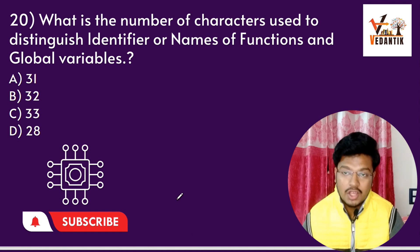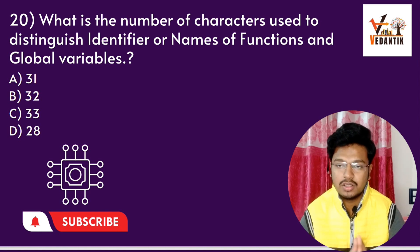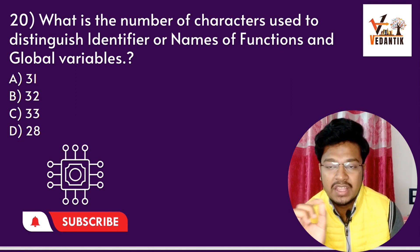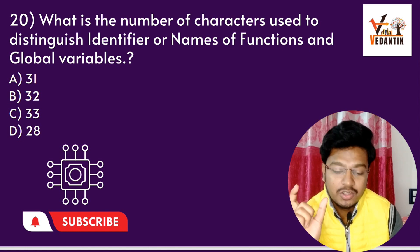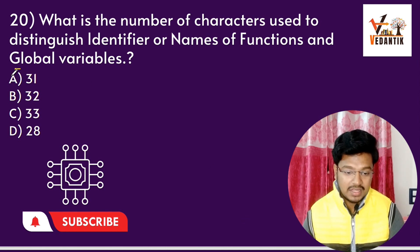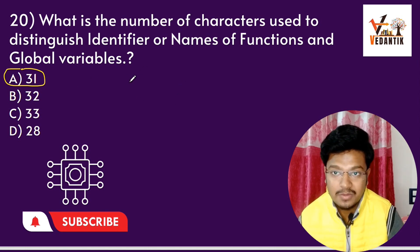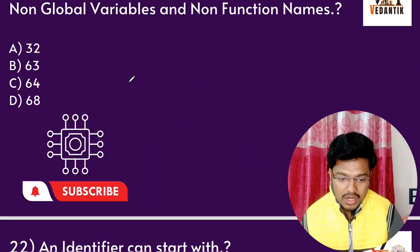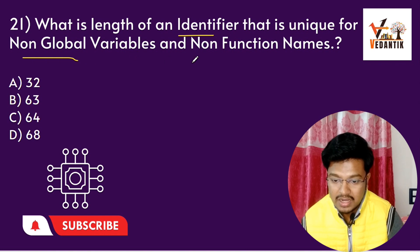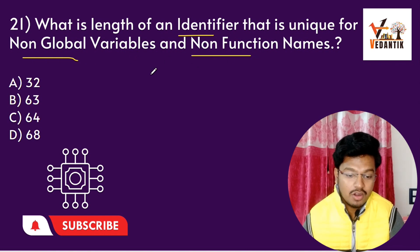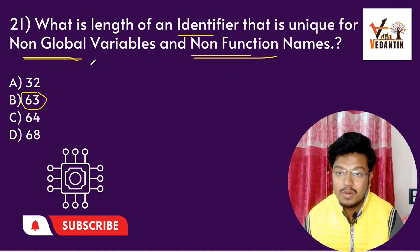Question 15: What is the number of characters used to distinguish identifier names of functions and global variables? For example, declaring int a = 5. The answer is 31 characters. Question 16: What is the length of an identifier that is unique for a non-global variable or non-function name? The answer is 63 characters.